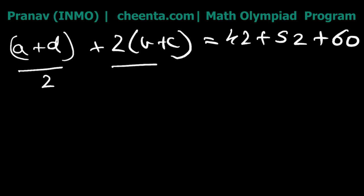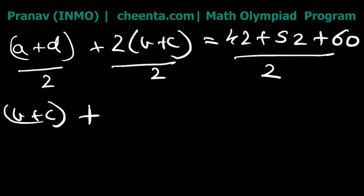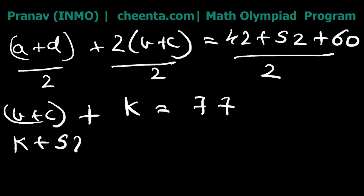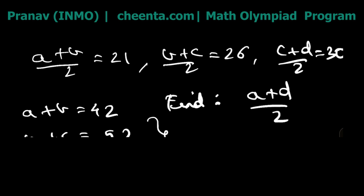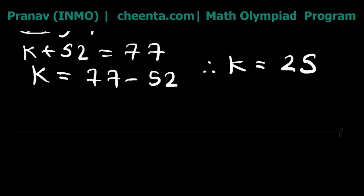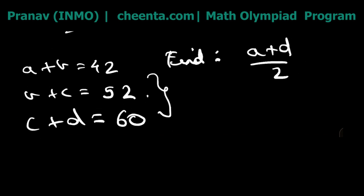Dividing both sides by 2 gives (b + c) + (a + d) / 2 = 77. Let k = (a + d) / 2, what we want to find. So k + (b + c) = 77. We already know b + c = 52 from our second equation, so k + 52 = 77, therefore k = 77 − 52 = 25. The average of the first and last numbers is 25, so option B is correct.